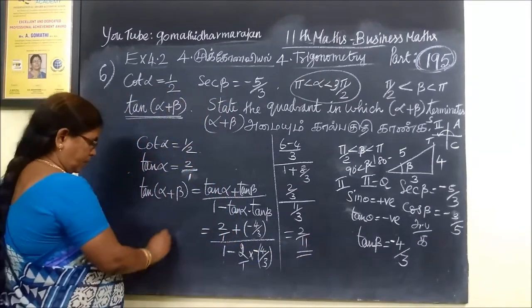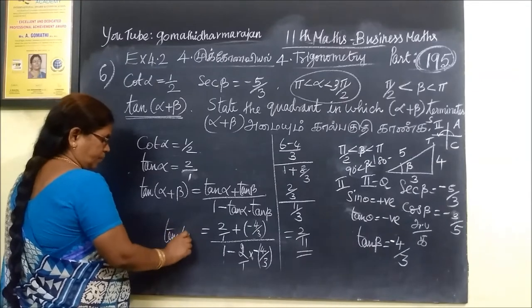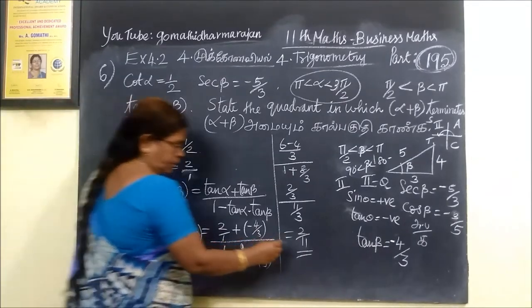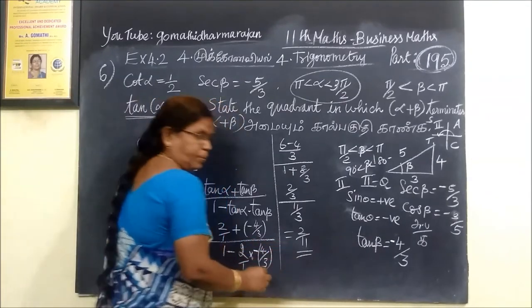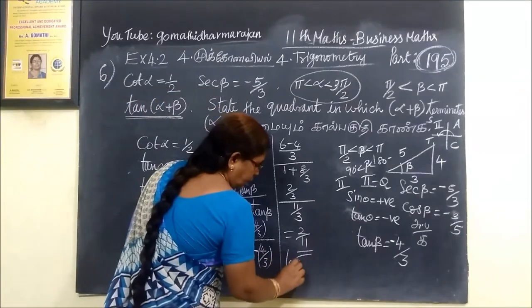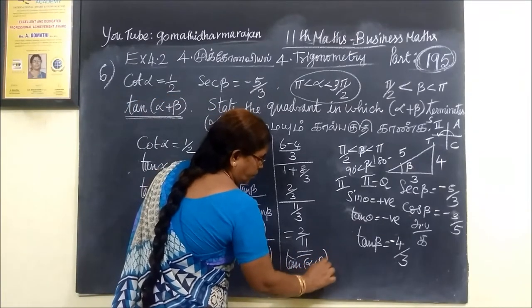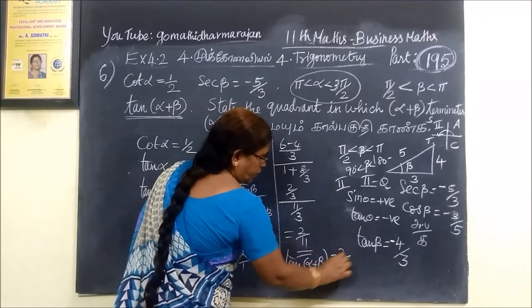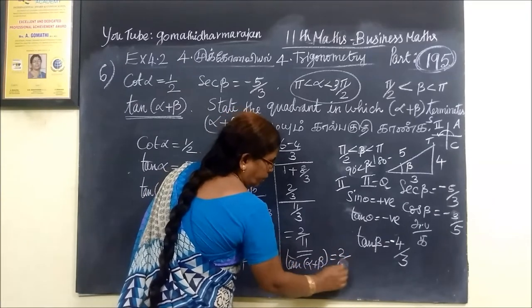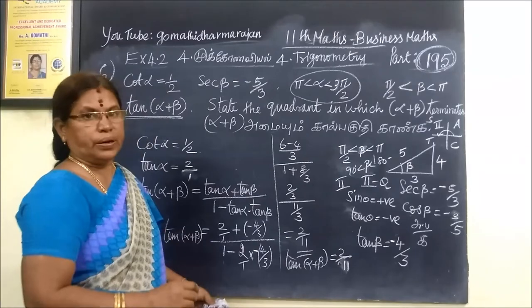So this is tan of alpha plus beta equal to 2 by 11. This is the final answer. Tan of alpha plus beta equals 2 by 11.